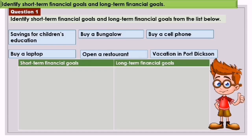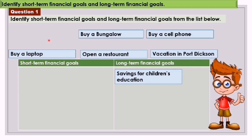Now let us identify short-term and long-term financial goals from the list below. The first one: saving for children's education. This is a long-term financial goal because it involves a large amount of money to achieve. Next, buy a cell phone. This does not involve a large amount of money, so this is a short-term financial goal.